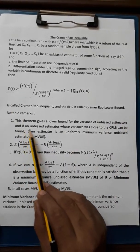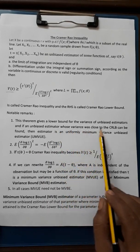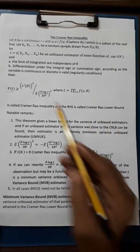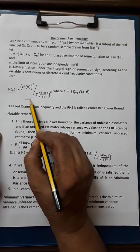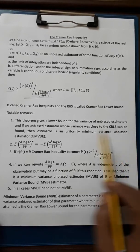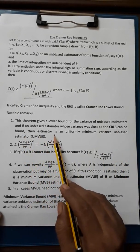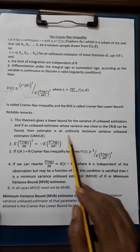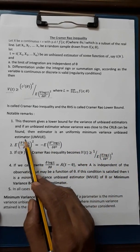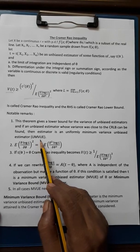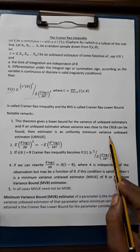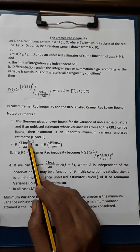And if an unbiased estimator whose variance was close to the Cramér-Rao lower bound can be found, then estimator is a Uniformly Minimum Variance Unbiased Estimator (UMVUE).